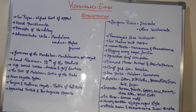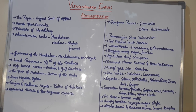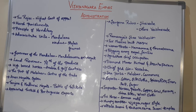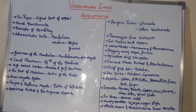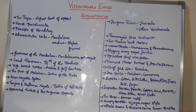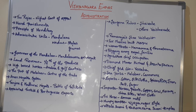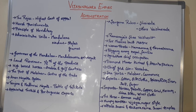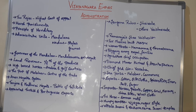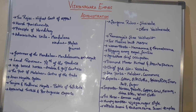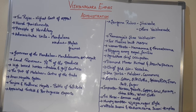Vijayanagara kings appointed Turkish and Portuguese experts. They did this because at that time, Turks and Portuguese were experts in using the latest weaponry of warfare, so they were appointed to train the soldiers of Vijayanagara. These Portuguese and Turkish experts were famous for firearms.